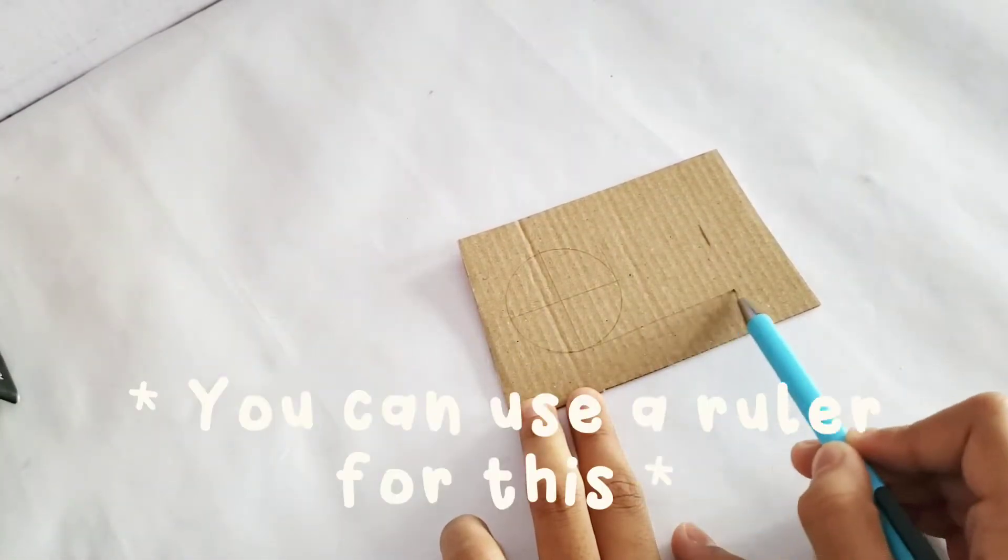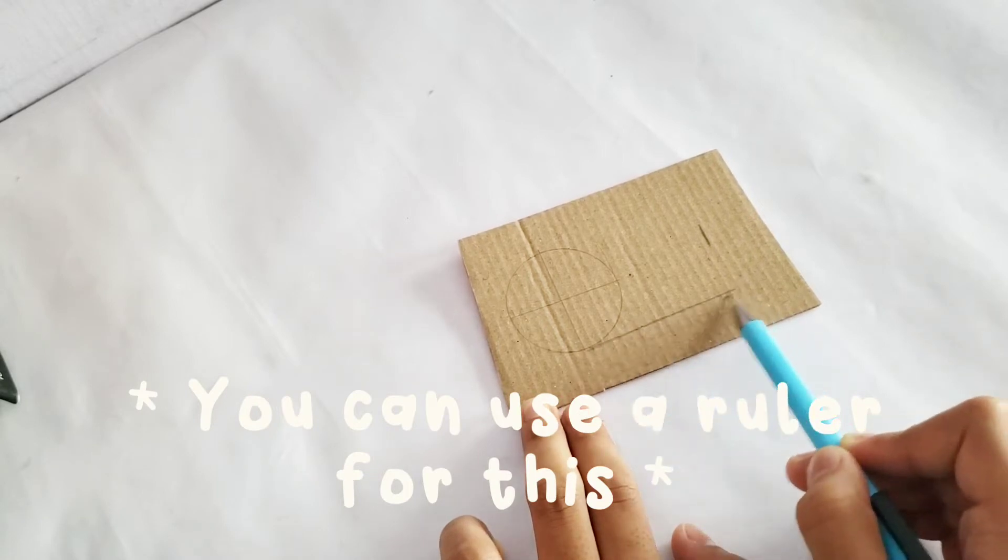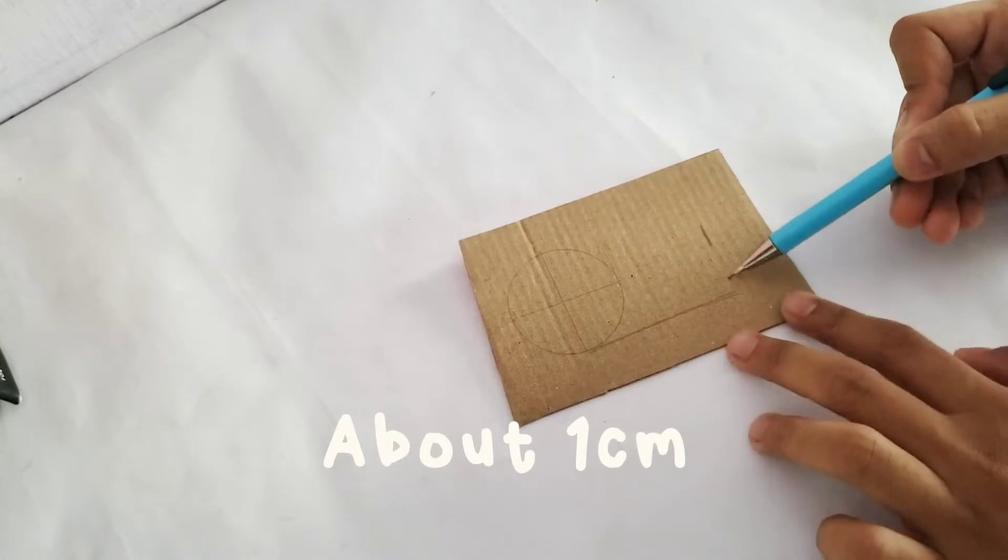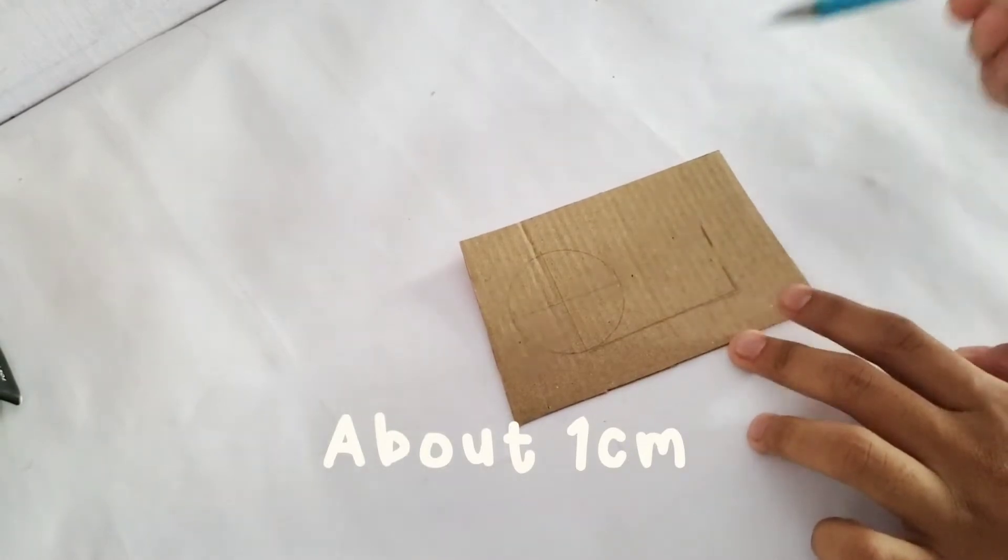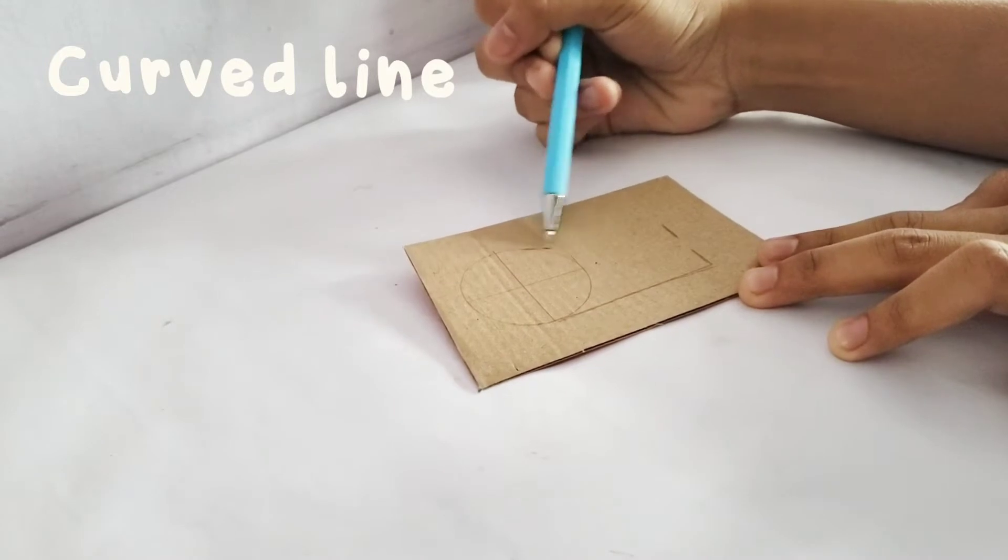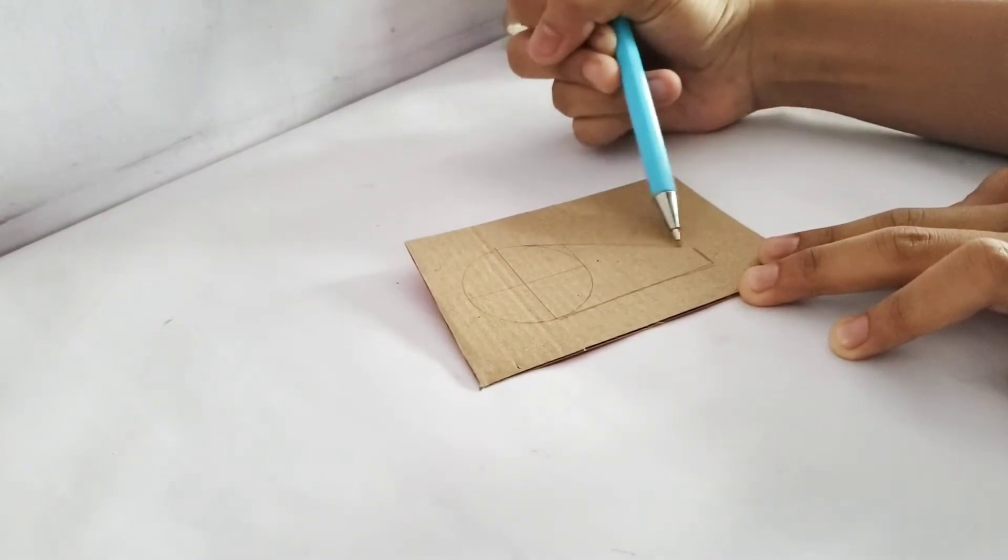Then, draw a line until the 3 inch mark. From the 3 inch mark, measure about 1 cm up. Then, from the top of the circle, just draw a curved line onto the mark.